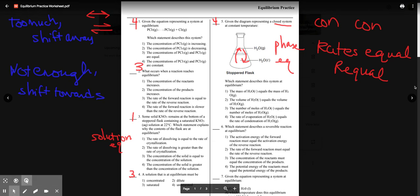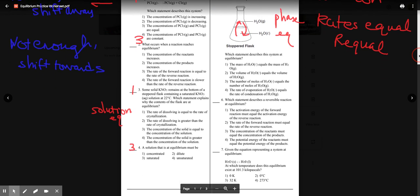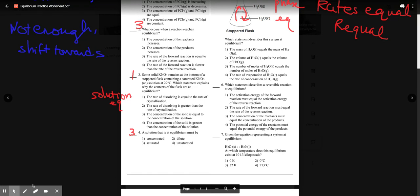Which statement describes a reversible reaction at equilibrium? So let's read. The activation energy of the forward must equal the activation energy of the reverse. The rate of the forward must equal the rate of the reverse. Concentration must be equal. No. So remember, constant or equal. The rate of the forward must equal the rate of the reverse.